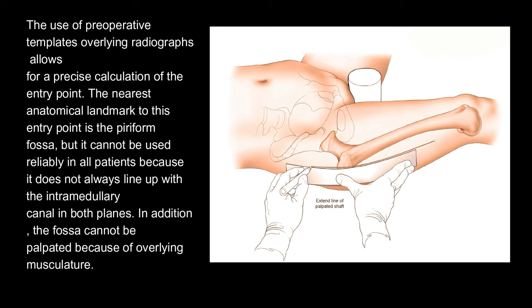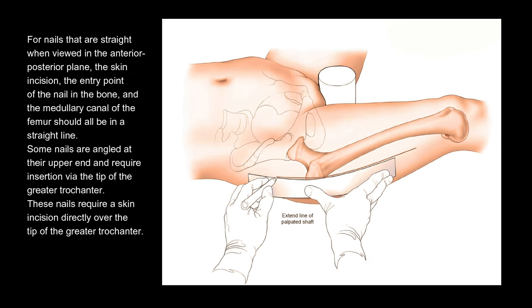The nearest anatomical landmark to this entry point is the piriform fossa, but it cannot be used reliably in all patients because it does not always line up with the intramedullary canal in both planes. In addition, the fossa cannot be palpated because of overlying musculature. For nails that are straight when viewed in the anterior-posterior plane, the skin incision, the entry point of the nail in the bone, and the medullary canal of the femur should all be in a straight line.